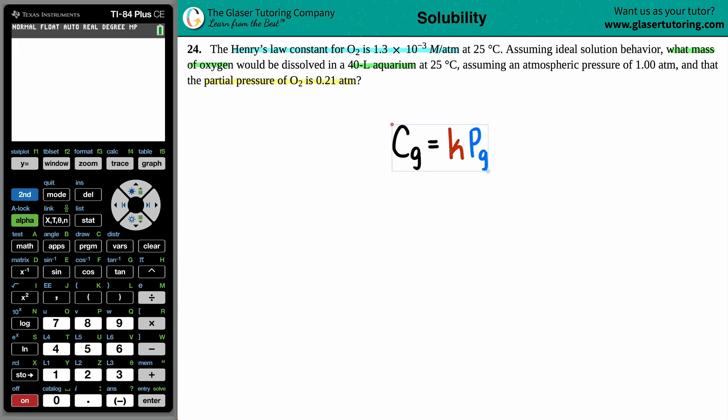CG equals KPG. CG, C stands for the concentration. Now another word for concentration is molarity. So you could think of this formula as M equals KP. The Gs just basically stand for that you're only dealing with gases. So this would be either the concentration of the gas or the molarity of the gas.